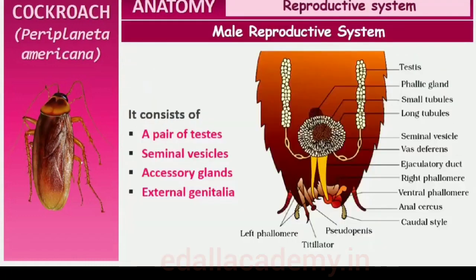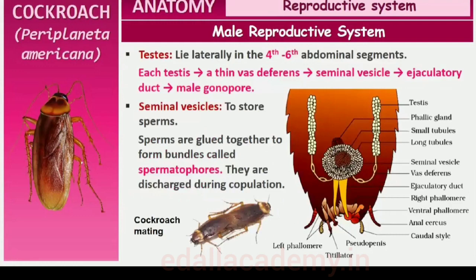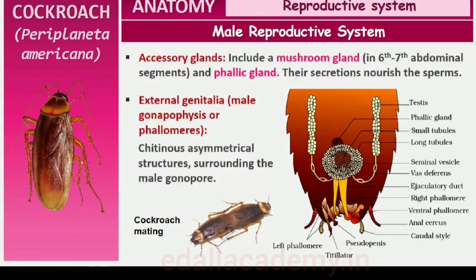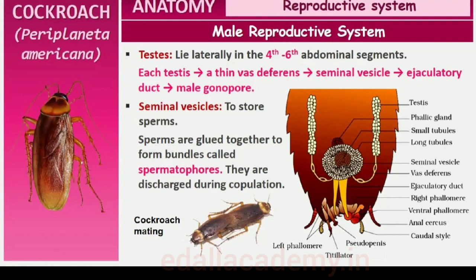Cockroaches are dioecious and both sexes have well-developed reproductive organs. The male reproductive system consists of a pair of testes, one on each lateral side in the 4th–6th abdominal segments. From each testis arises a thin vas deferens, which opens into the ejaculatory duct through the seminal vesicle. The ejaculatory duct opens into the male gonopore situated ventral to the anus. A characteristic mushroom-shaped gland is present in the 6th–7th abdominal segments functioning as an accessory reproductive gland. The external genitalia are represented by male gonapophyses or phallomeres, chitinous asymmetrical structures surrounding the male gonopore. The sperms are stored in the seminal vesicles and are glued together in the form of bundles called spermatophores, which are discharged during copulation.